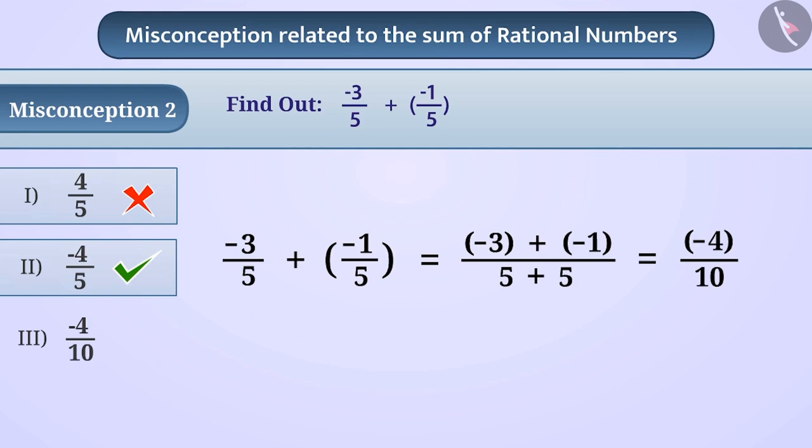In this way, they get the result minus 4 by 10. This is also a misunderstanding whereby option 3 gives this incorrect answer. This false belief arises due to lack of proper understanding of part and whole.